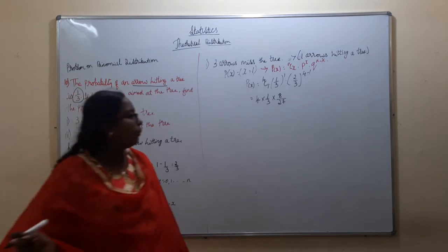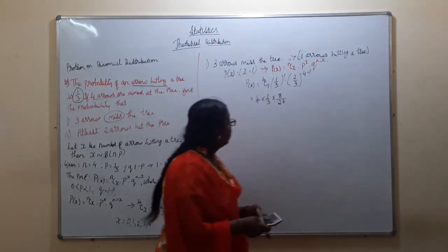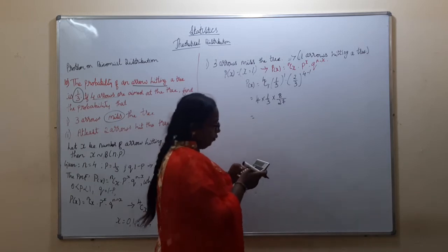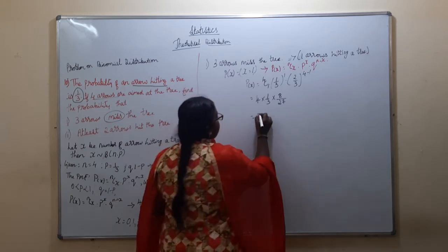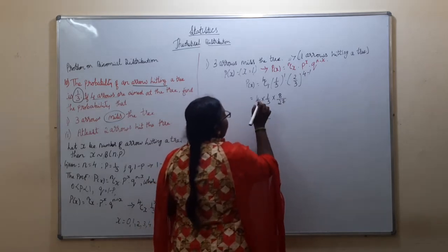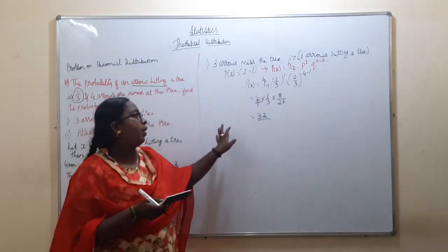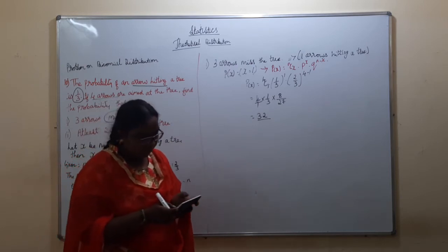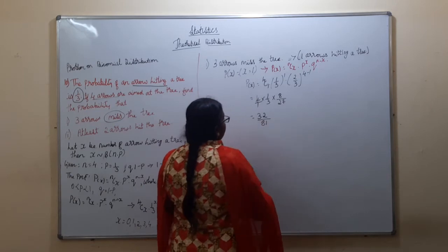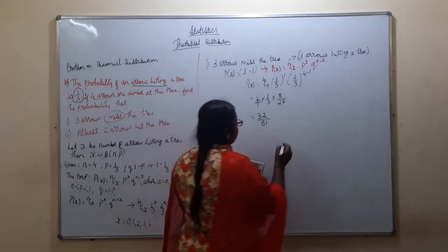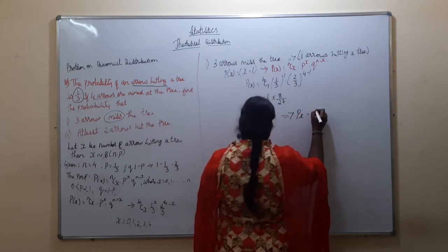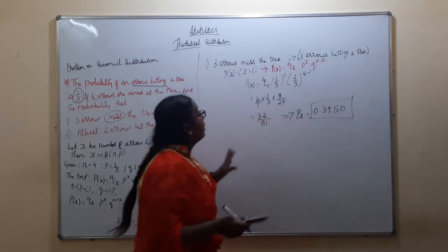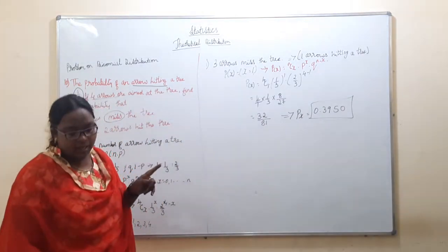Simplifying: 4 into 1 into 8 = 32 in the numerator. Denominator: 3 into 27 = 81. So P(x=1) = 32/81 = 0.3950. The probability that 3 arrows miss the tree is 0.3950.